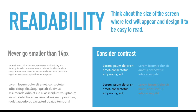Next would be readability. Think about the size of the screen where text will appear and design it to be easy to read. One rule of thumb: never go smaller than 14 pixels. Maybe it works for the footer or small captions, but for body copy it's not ideal, especially on mobile. Also consider contrast — choosing the right colors in regards to the background color or image. For example, white versus light blue on a blue background, or black versus gray. There must be clear contrast between the letters, not only by color but also by sizing — a clear contrast between the header size and subheading size, and its relationship with the body.